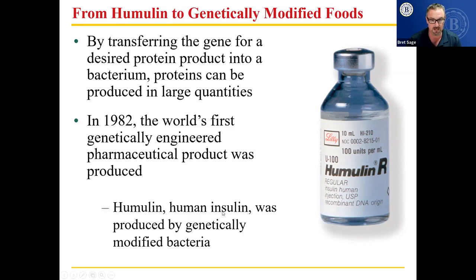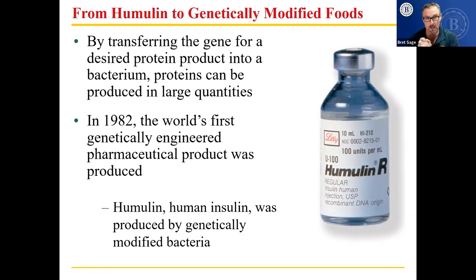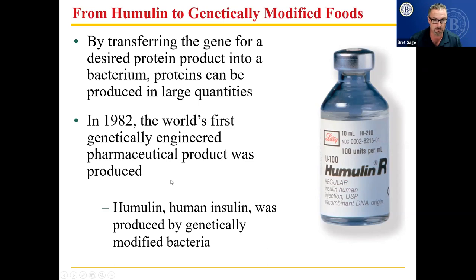Humulin — which is human insulin, by the way, that's a portmanteau. Bennifer is a portmanteau of Ben Affleck and Jennifer Lopez. Here the portmanteau is human plus insulin equals humulin. It was made by genetically modified bacteria and, because it was so much better and more inexpensive, the FDA approved it and a lot of people have been using it.